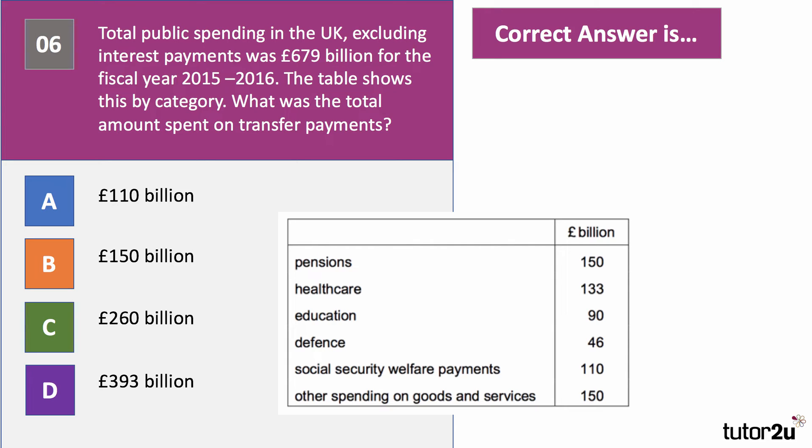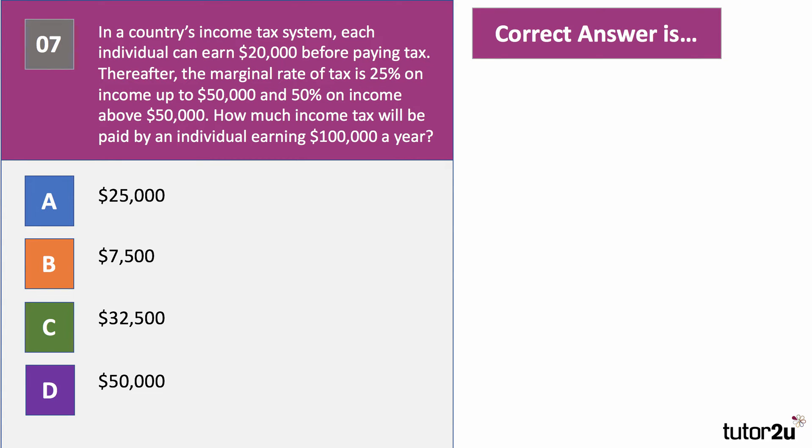For question six, you need to identify which items are transfer payments. Pensions — yes. Healthcare — no, that's a merit good/public service. Education — no, public service. Defense — no. Welfare — yes. Other goods and services — public services, not a transfer payment. Adding 150 billion and 110 billion gives 260 billion. The answer is C. A transfer payment is a transfer from taxpayers to welfare or pension recipients.